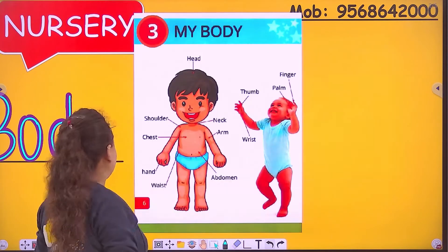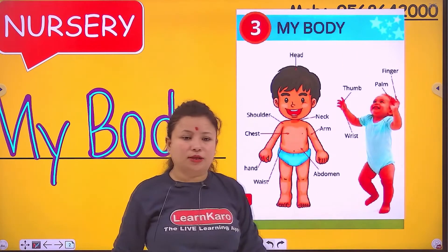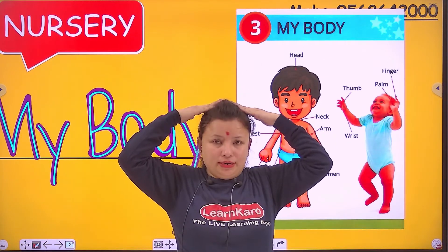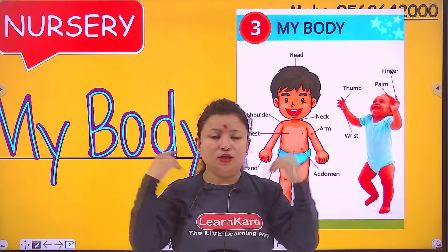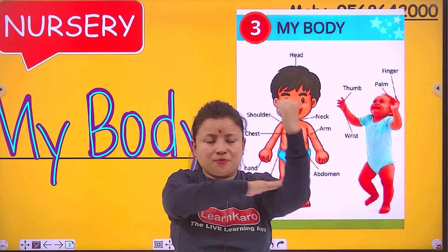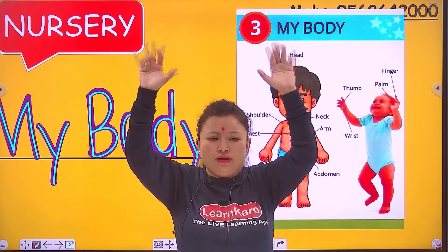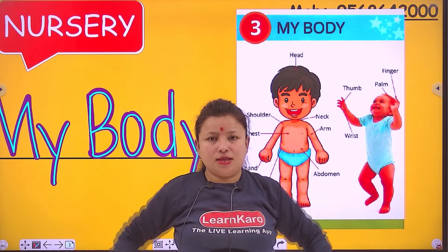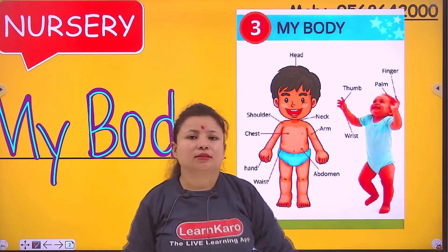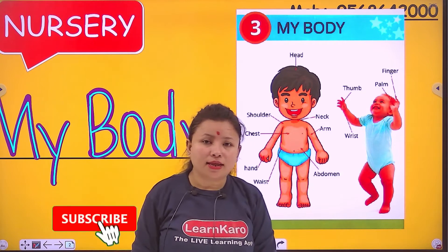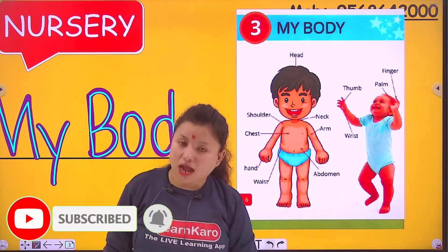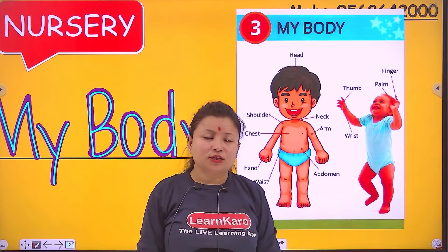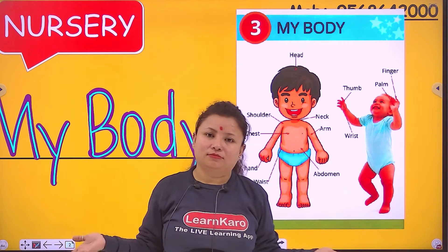Now let's learn one more time. Okay, now without book. Head. Head. Neck. Shoulder. Arm. Hand. Fingers. Thumb. Leg. Thigh. Thigh. Knee. Knee. Heel. Foot and toes. Very good.